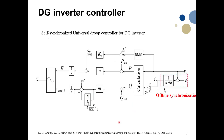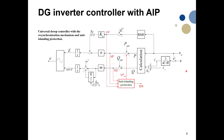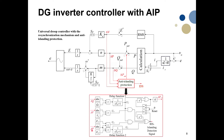For this study, we consider a controller called the self-synchronized universal droop controller. This controller has built-in offline synchronization — before turning on the PWM, it performs offline synchronization, and when synchronization is complete, it turns on the PWM to connect to the grid. We also developed an anti-islanding protection system based on data already available from the controller, so no additional sensors are needed. This is the islanding detection circuit that we implemented.